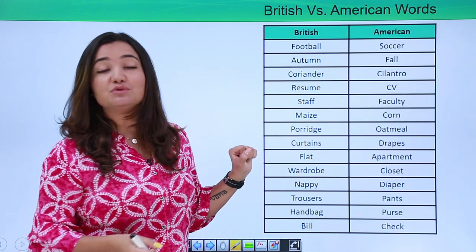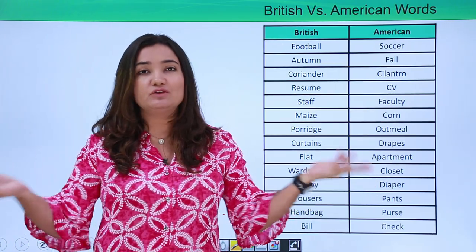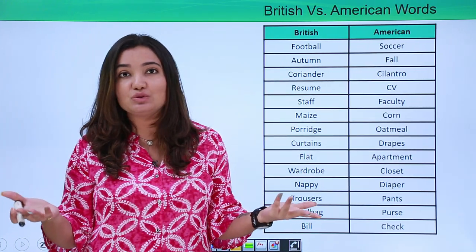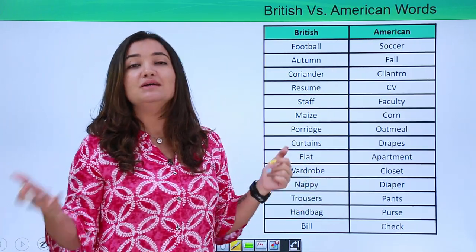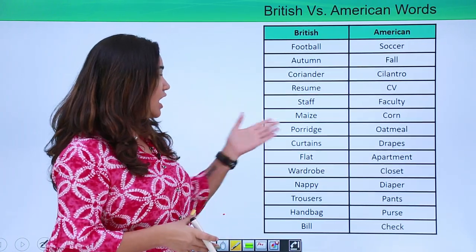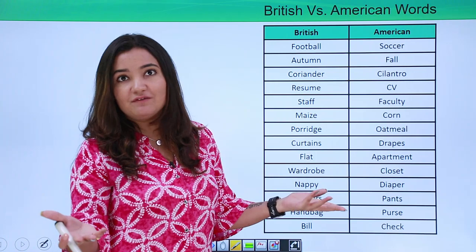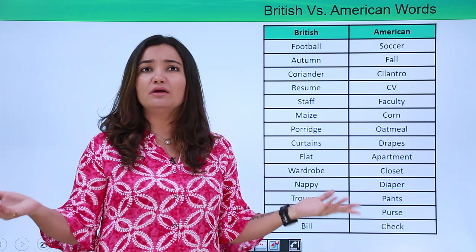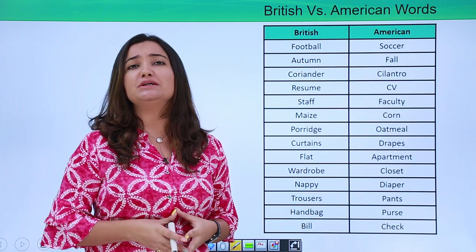A Brit would call it maize whereas an American would call it corn. Not something very tough to gauge — we may be aware of both words, but now you'll easily recognize which version a person uses. The meaning is the same but the words are different. How about porridge? A very common breakfast item — an American would call it oatmeal. Not a huge difference, just a difference in semantics, and once you're aware, you're through it.